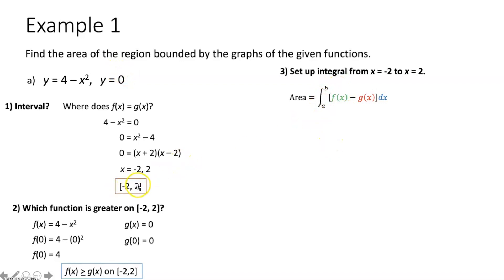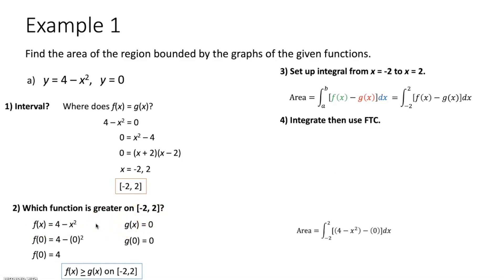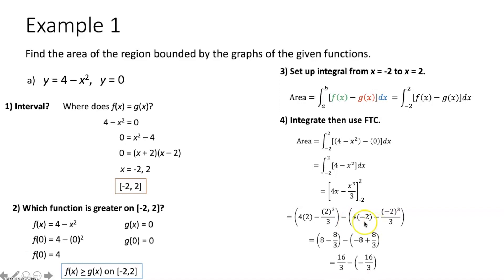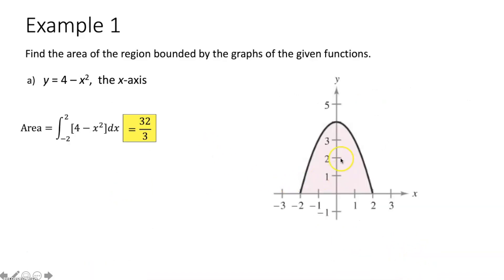The integral is from -2 to 2 of f(x) minus g(x), which simplifies to the integral from -2 to 2 of (4 - x²) dx. Taking the anti-derivative and evaluating using the fundamental theorem of calculus — plugging in the upper limit 2, subtracting when we plug in the lower limit -2 — we get the area between our two functions on the interval from -2 to 2 is 32/3, exactly what we found before. We can confirm this with the graph.